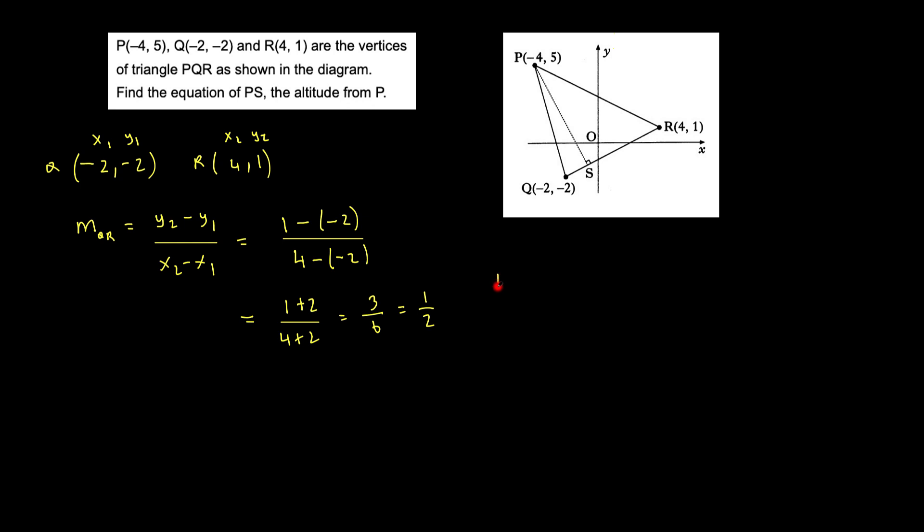Because the product of the gradient of QR times the product of the gradient of PS would equal to minus 1. And of course we have QR which we already know is a half. So the gradient of course is minus 2.